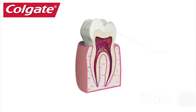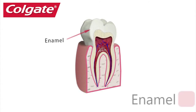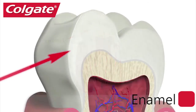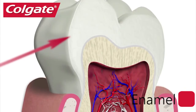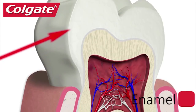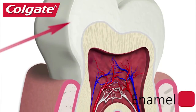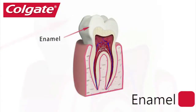The outermost layer of a tooth crown is enamel. This is the hardest, most mineralised tissue in the body, yet it can be damaged by decay if teeth are not cared for properly. Enamel is almost transparent.